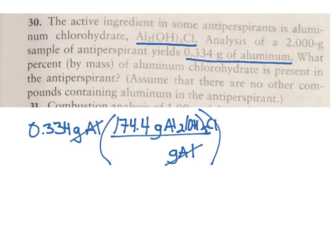In every one formula, there's 2 aluminums. Each aluminum weighs 27, so I have 2 times 27 in the denominator.